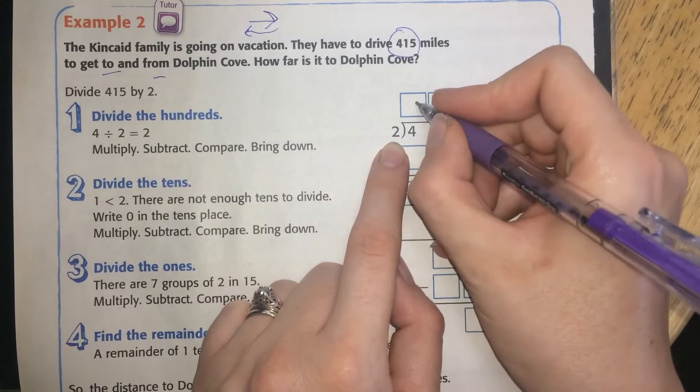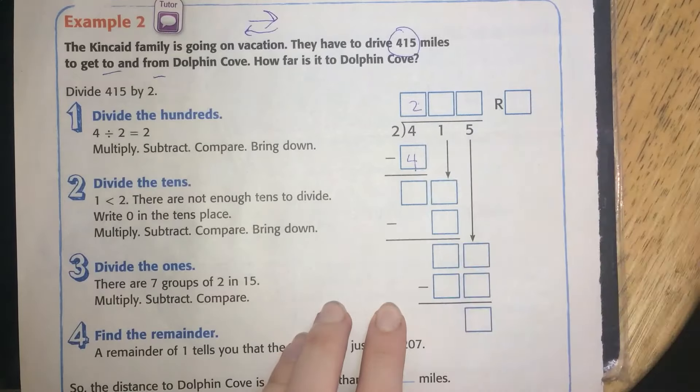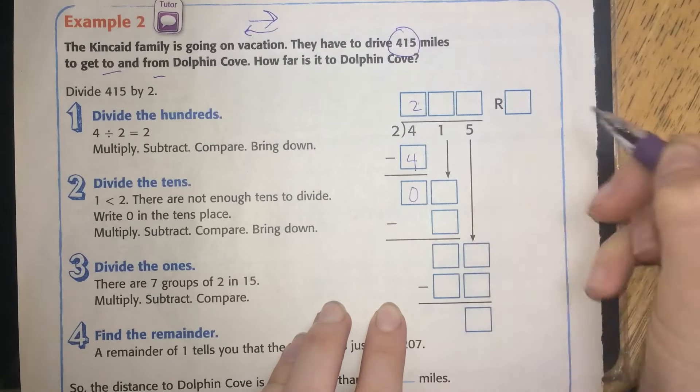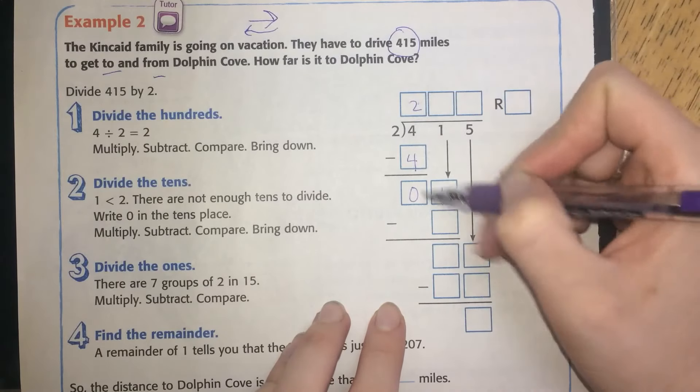4 divided by 2 is 2. 2 times 2 is 4. 4 minus 4 is 0. Bring down the 1. Now we divide again.